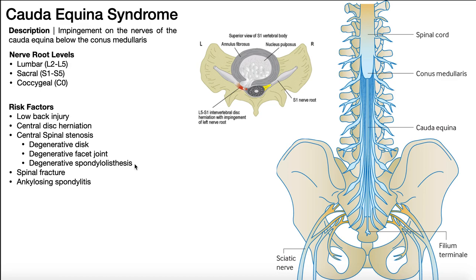Spinal fractures are also a risk factor — if any part of the bone breaks loose or any inflammation takes up space, that can hurt the cauda equina. Ankylosing spondylitis is a risk factor because you get excessive bone growth around the vertebrae, causing the vertebrae to fuse together. Because the excessive bone growth can occur within the vertebral canal, that also takes up space and therefore leads to more compression on the cauda equina.